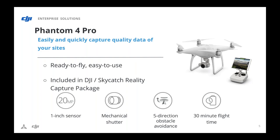The first tool is what I believe is the most scalable, ready-to-fly, and easy-to-use platform on the market today — the Phantom 4 Pro. It quickly captures quality data of your site using a quality camera shooting at about 20 megapixels, as well as a programmable flight mode through either our app or SkyCatch's app, which will essentially automate the mapping process. We do have a DJI-SkyCatch reality capture package. With the mechanical shutter, you'll get minimal distortion as well as a long flight time.